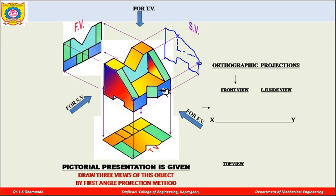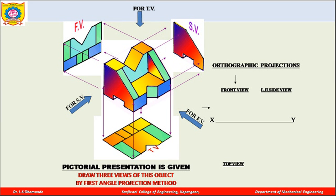This is what your side view will look like from this side. The hidden portion will be visible as a hidden dashed line, as just explained.